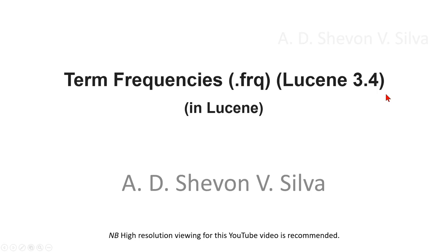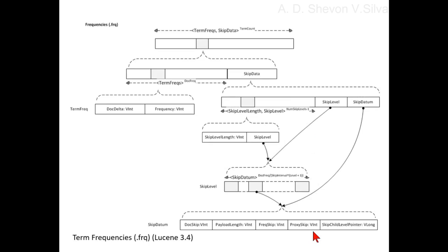Term frequencies dot frq in Lucene 3.4. Here you can see the dot frq file, which contains the list of documents that contain each term, along with the frequency of the term in that document. This file contains the term posting list.